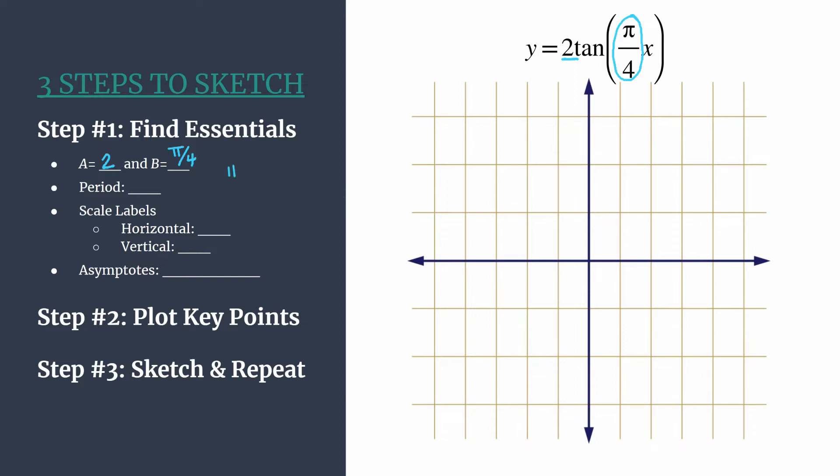So pi divided by B, pi divided by pi over four, it's going to be easier to think about this as pi times the reciprocal, four over pi. And you can rewrite the pi over one just to make things look nice and simple. You can cross cancel here the like terms of pi, so you'd be left with ones in both of those cases. And the period now is actually not in terms of pi at all. It's just four.